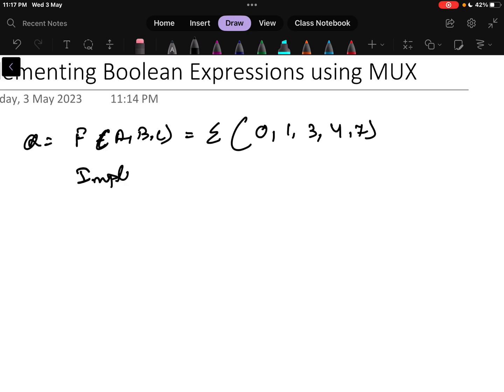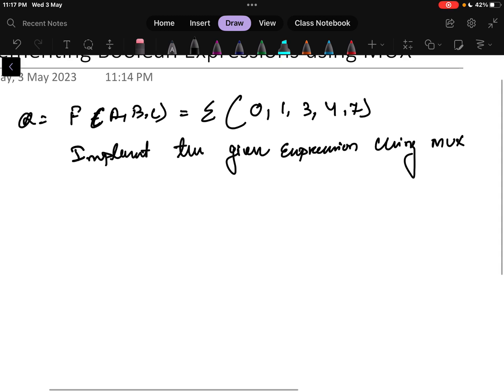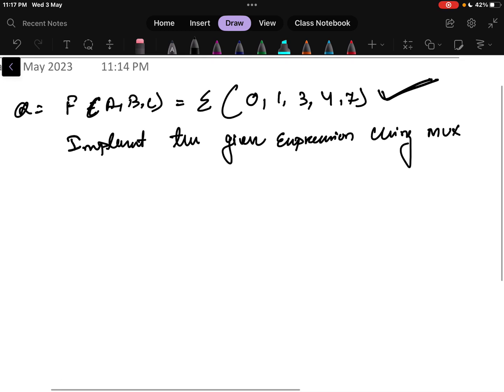The question is implement the given expression using MUX. Previously you have done this particular experiment using logic gates or Boolean expressions, now we are going to use MUX. Before proceeding how to design with MUX, first write the truth table. This is the output I need, so for that first write the truth table and according to the output we will be further going for the design.